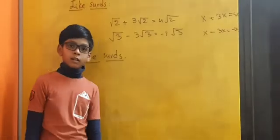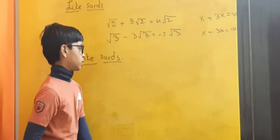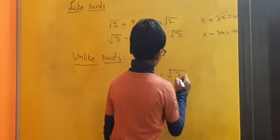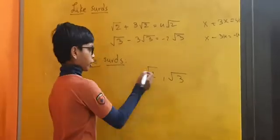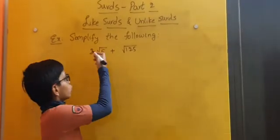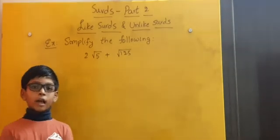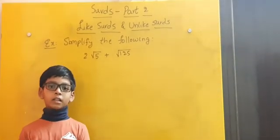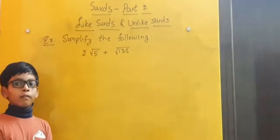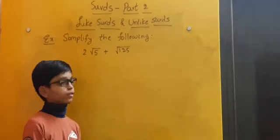Next one is unlike surds. Unlike surds are surds whose root part is not same. Let us take √2 and √3. They do not have the same root part and they cannot be added or subtracted. So now let us simplify 2√5 + √125. As I told you earlier, we can only simplify like surds but not unlike surds. So to simplify unlike surds, we have to convert both of these into like surds.